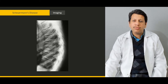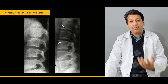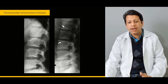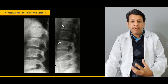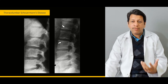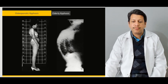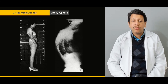From there we move on to the different types of Scheuermann's kyphosis — one is thoracic and the other is thoracolumbar kyphosis, which we will briefly discuss. We will also discuss the pathognomonic feature of Scheuermann's kyphosis, that is Schmorl's nodes.